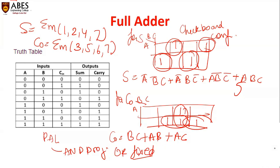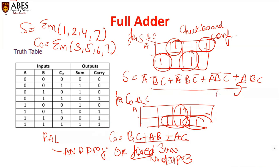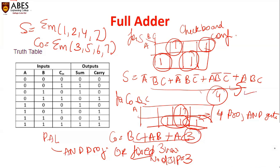We have three variables A, B, C, so the number of input buffers required equals three. For sum there are four min terms and for carry there are three min terms. In PAL, the rule is to use the highest number of min terms — which is four — so we require four programmable AND gates for sum and four programmable AND gates for carry output, giving eight AND gates total.